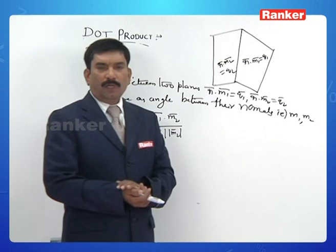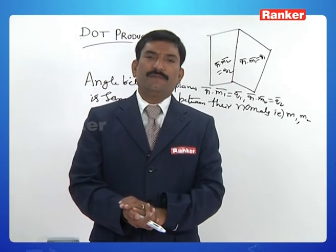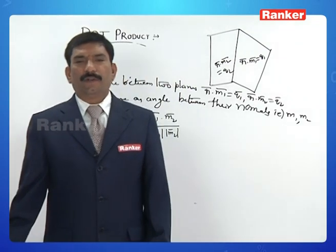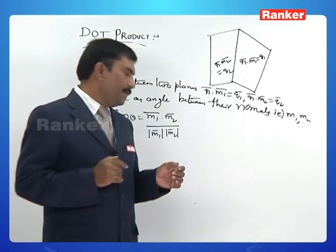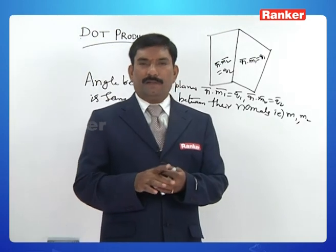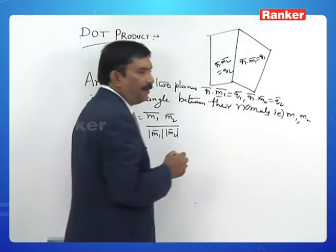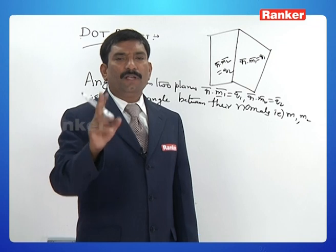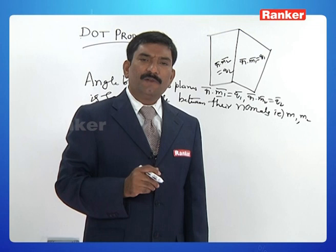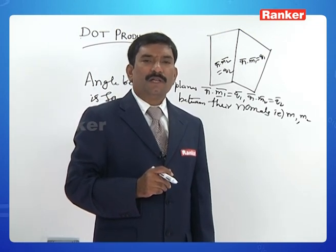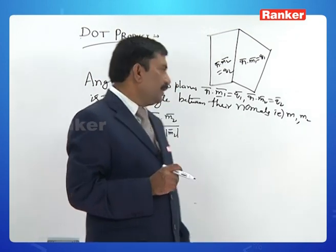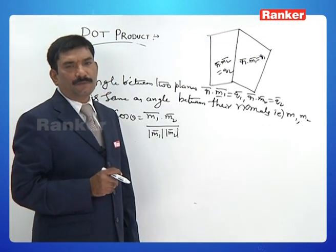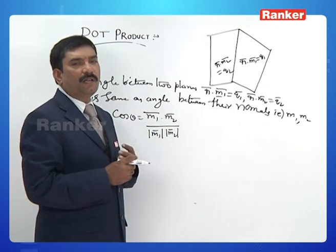The vector equation of a plane where p is the perpendicular distance from the origin and n̂ is the unit normal vector is r̄ dot n̂ equals p. Here n̂ is the normal. In place of n̂ we have M₁, and M₂ in place of n₂. M₁ and M₂ are the normals, so the angle between two planes equals the angle between their normals: cos θ equals M₁ dot M₂ over (|M₁| × |M₂|).